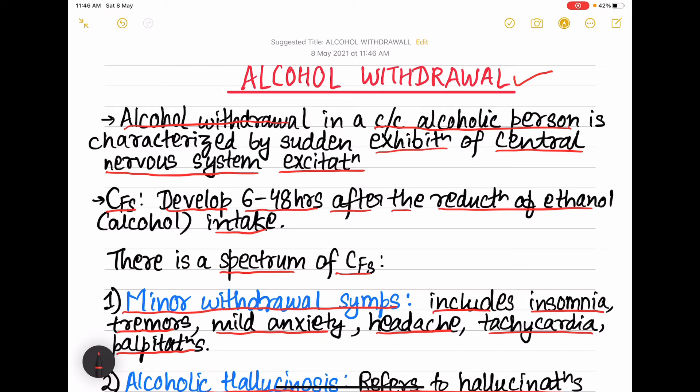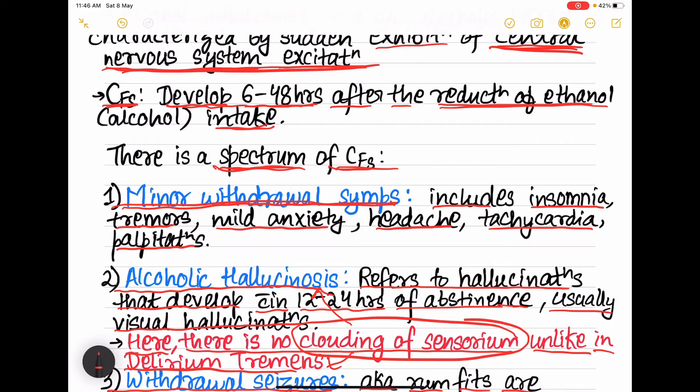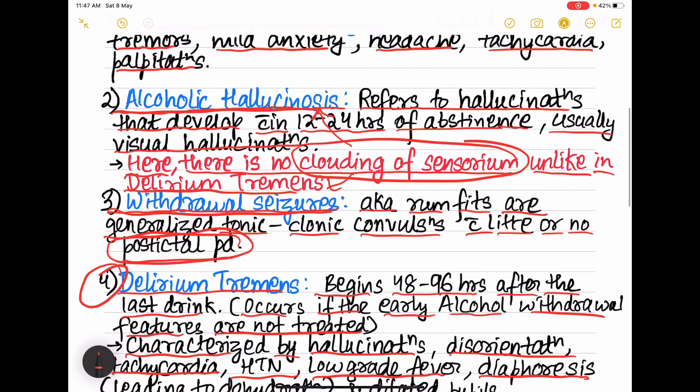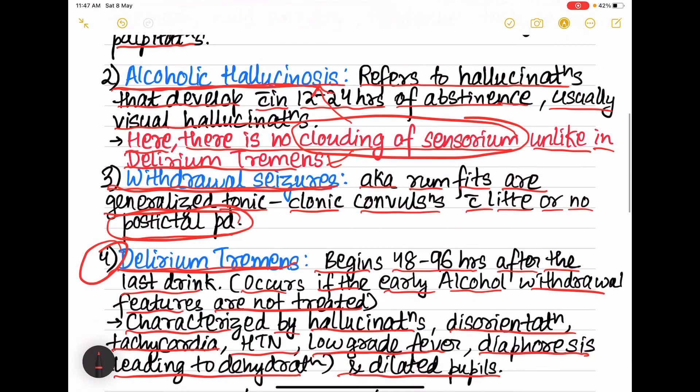Clinical features usually develop 6 to 48 hours after the reduction of the alcohol intake. There is a spectrum of clinical features: first is minor withdrawal symptoms, then alcoholic hallucinosis, then withdrawal seizures and delirium tremens. Out of this you have to remember delirium tremens because it is an important topic and can be asked separately.